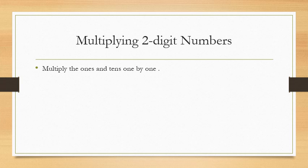Now children, first let us learn how to multiply a two digit number. To multiply a two digit number by a one digit number, we have to multiply the ones and tens one by one.